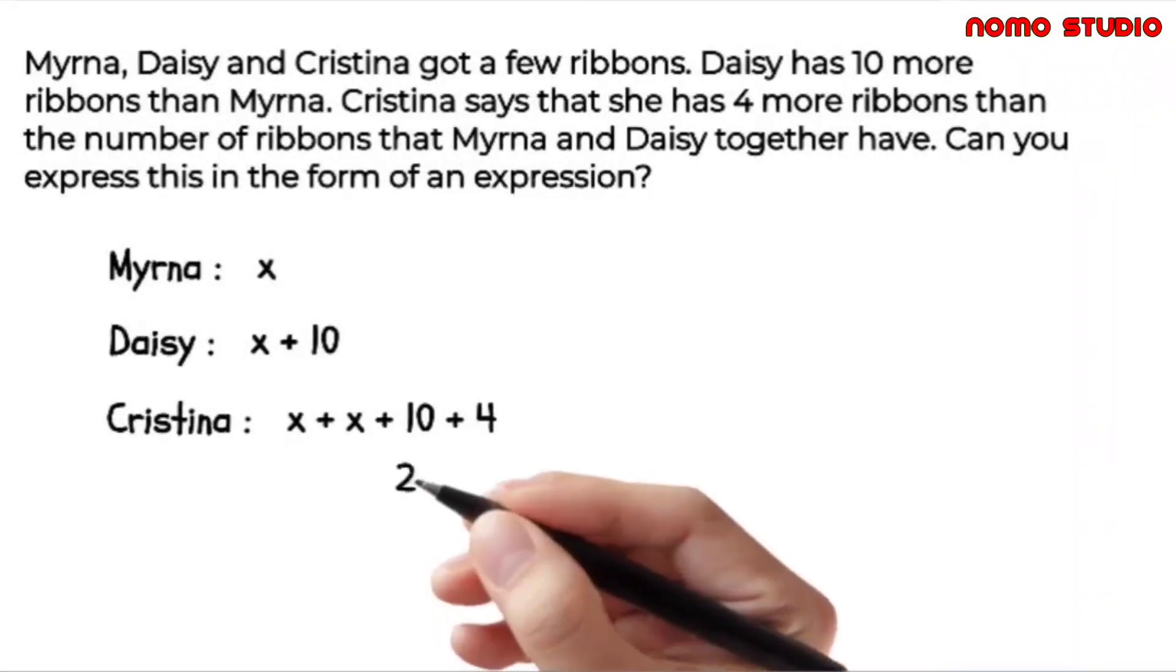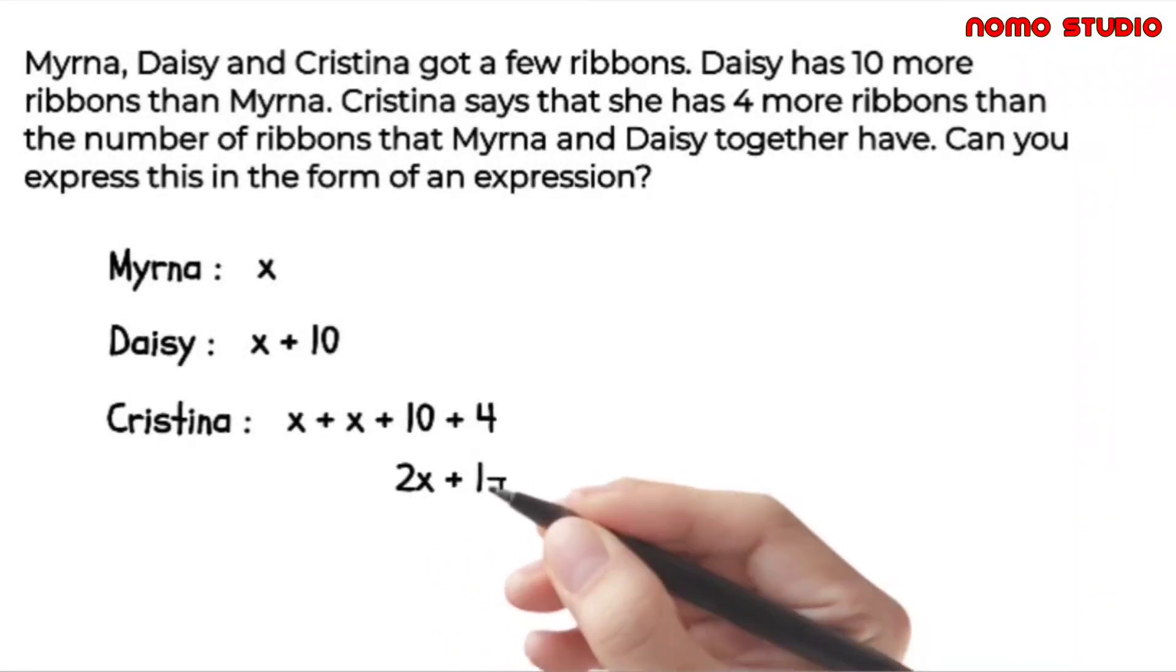X plus X is just 2X. Then 10 plus 4 is equal to 14. Therefore, it's 2X plus 14. This is for Christina's total number of ribbons.